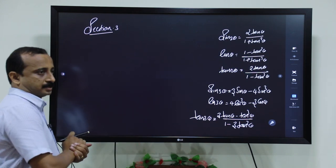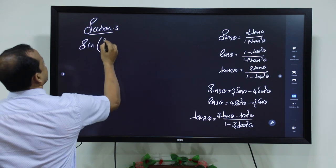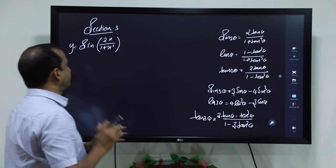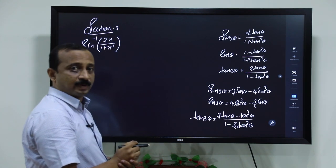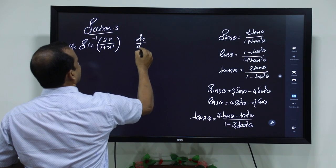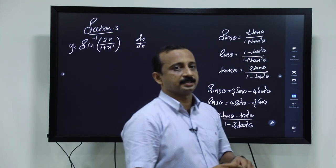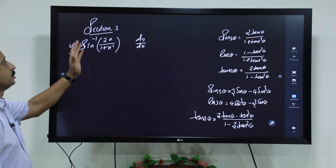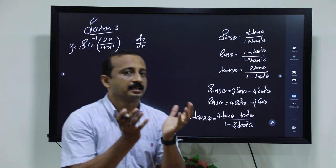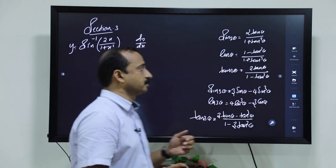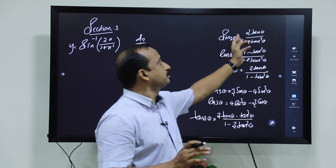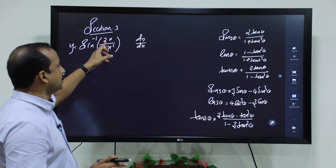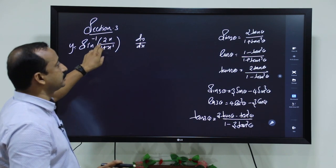Now, our first question: simplify y equals sin⁻¹(2x / (1 + x²)), then find dy/dx. First, we put x equal to tan θ. You know sin 2θ in terms of tan gives 2 tan θ by 1 plus tan² θ. This is of that form. When we put x equal to tan θ, we get 2 tan θ by 1 plus tan² θ equal to sin 2θ.